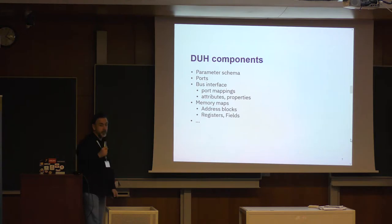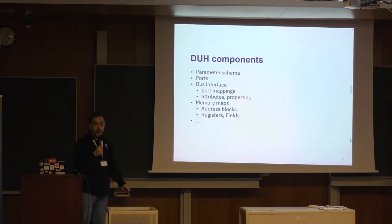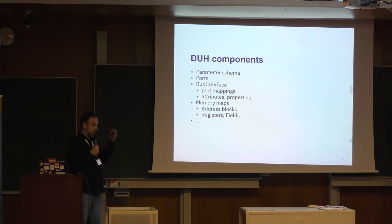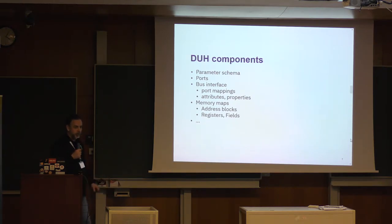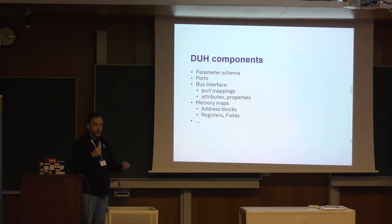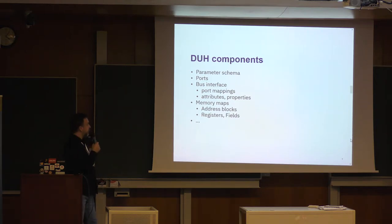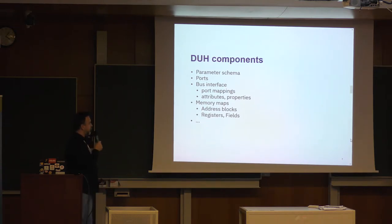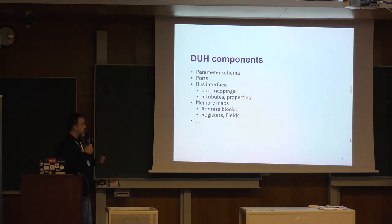A DOOH component is basically a JSON file that describes an IP and describes its integration intent — how you want to connect this IP and what its interface is. On a high level, you want to know: is it a parameterizable IP? If so, what kind of parameters does it take, what are the constraints and schema of those parameters, and when you parameterize it, what would be the port list? Which pins are actually buses, and how do they map to the bus definitions you have?